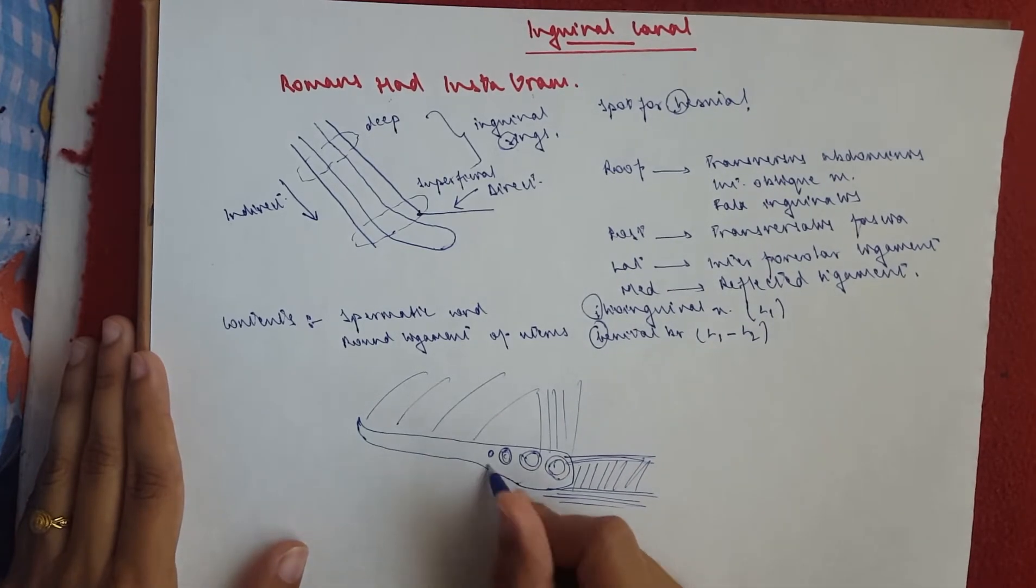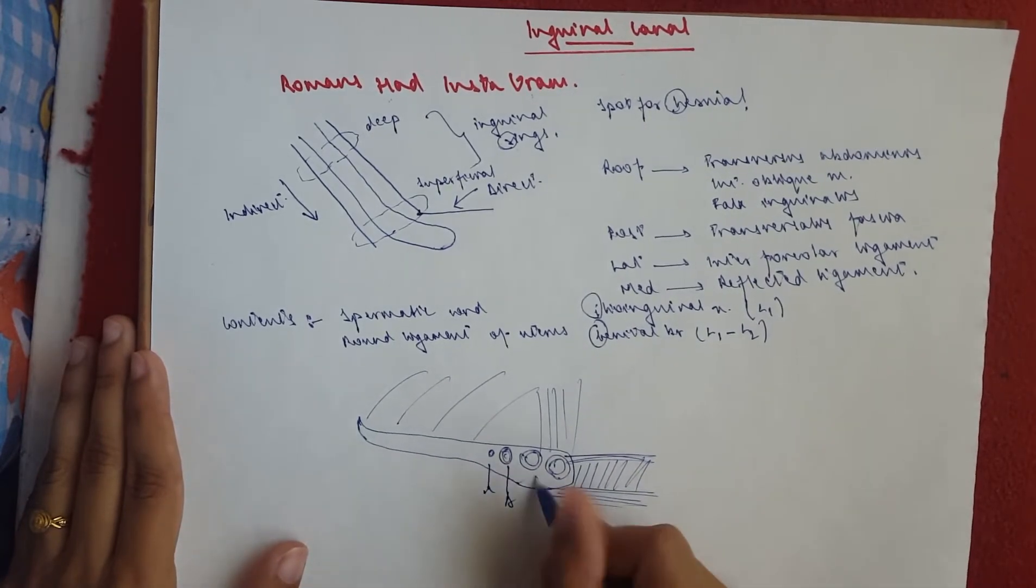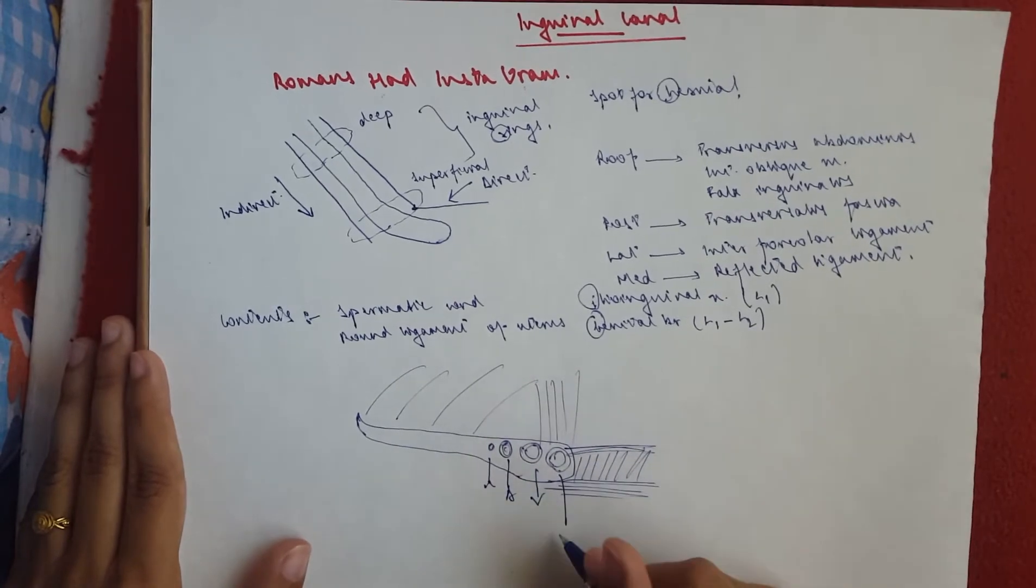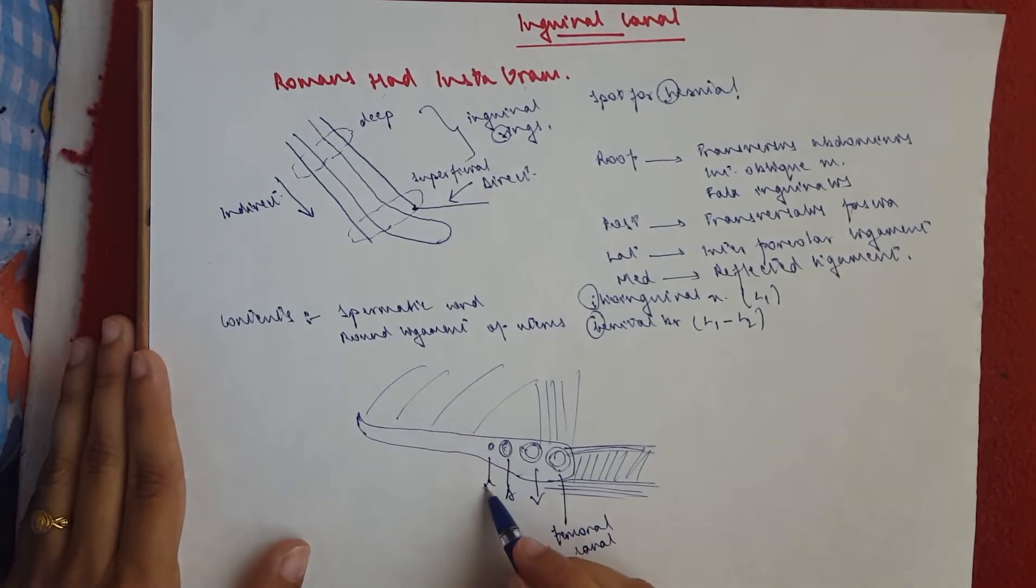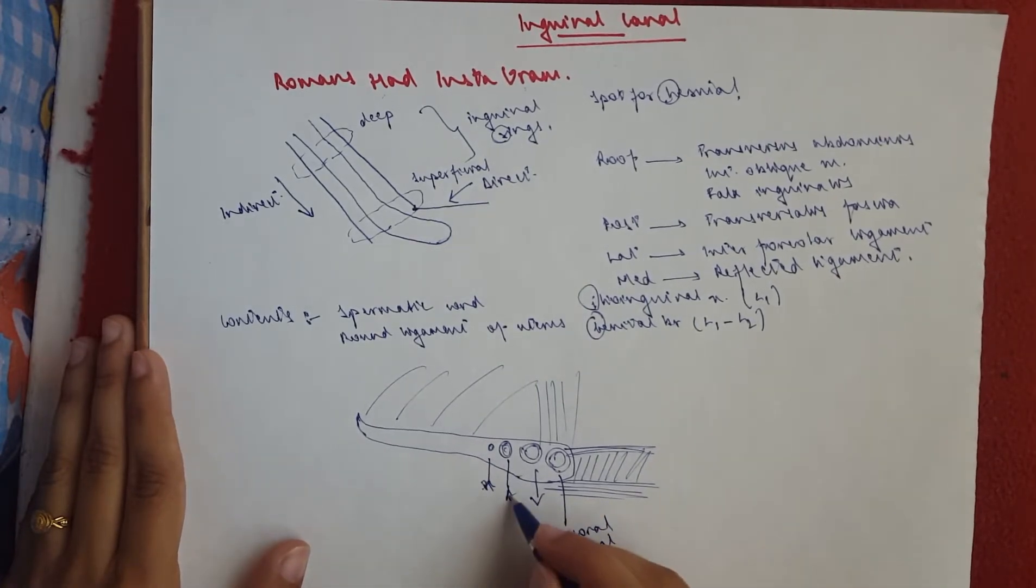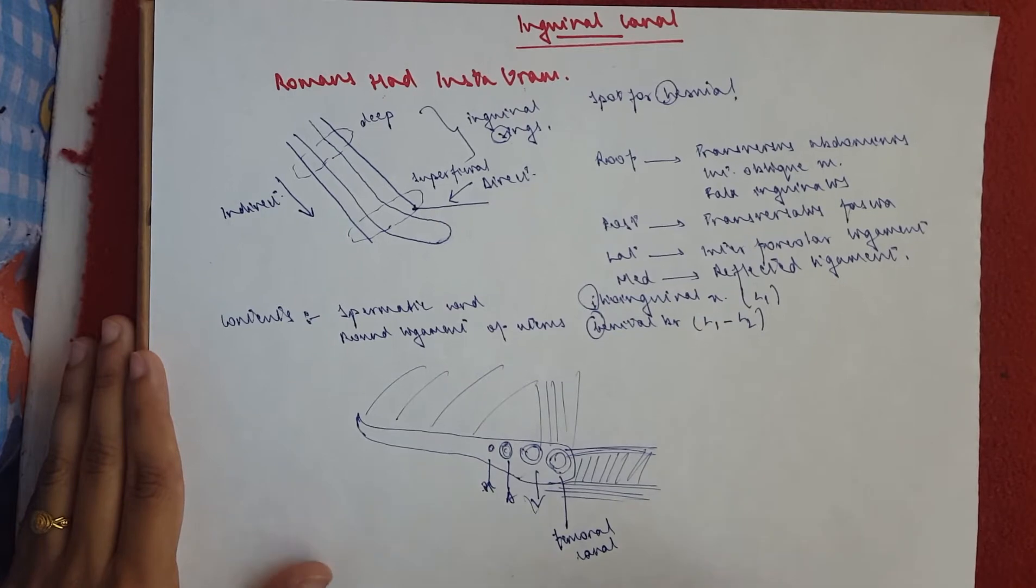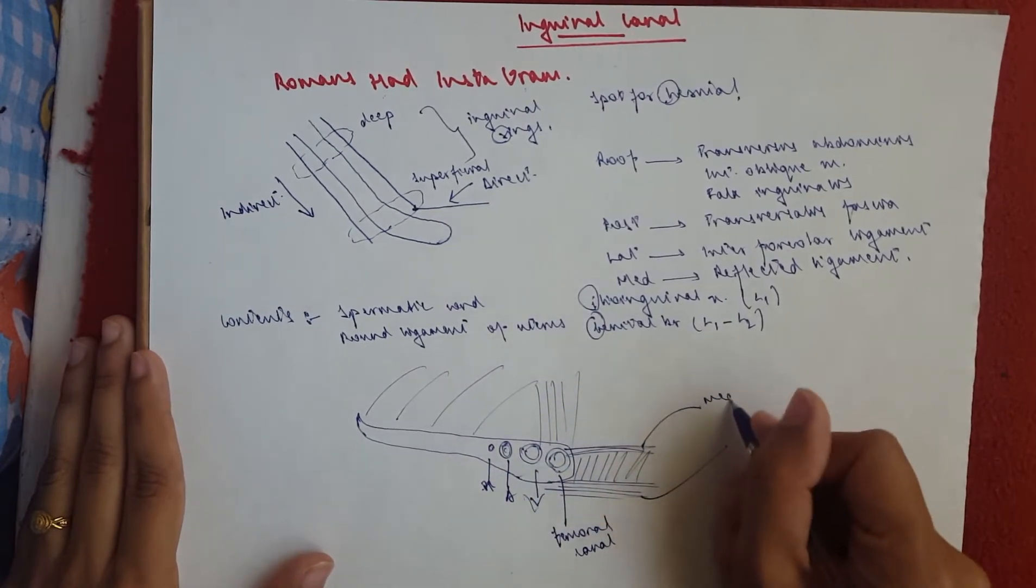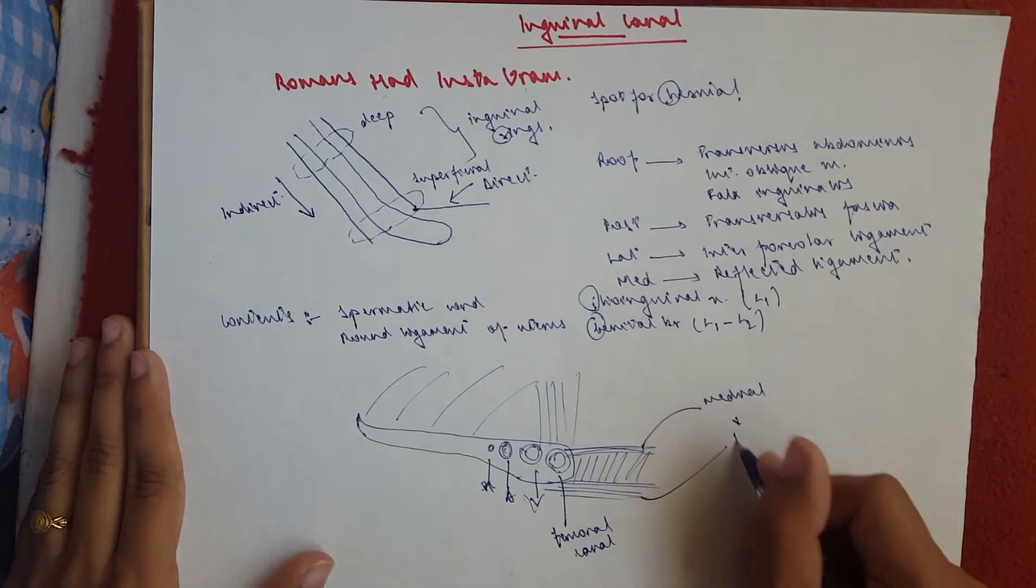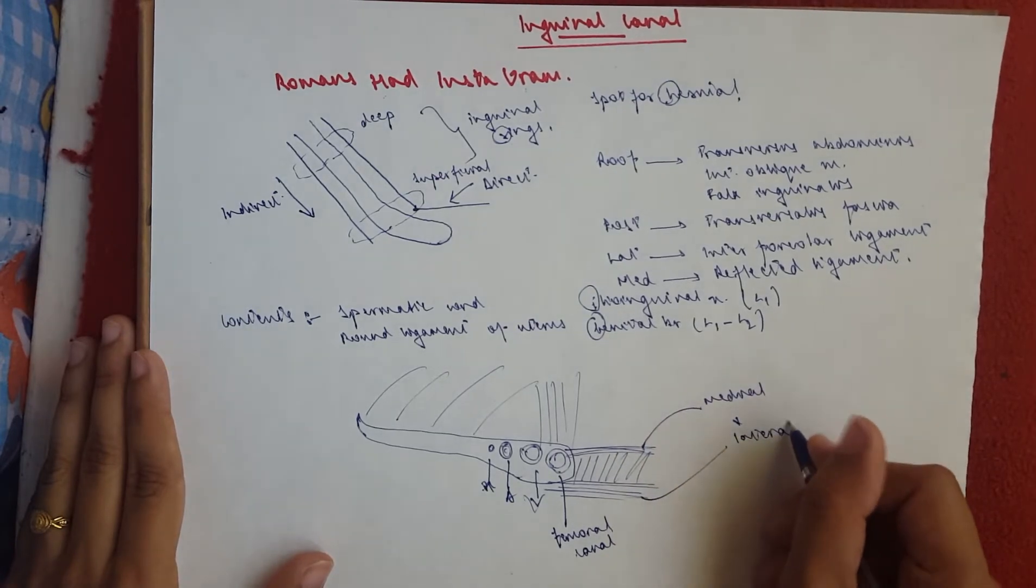Okay, so this would be our NAV. And this is our femoral canal. This is our femoral nerve, femoral artery, femoral vein. Okay, now this is important. This and this is the medial and the lateral crura.